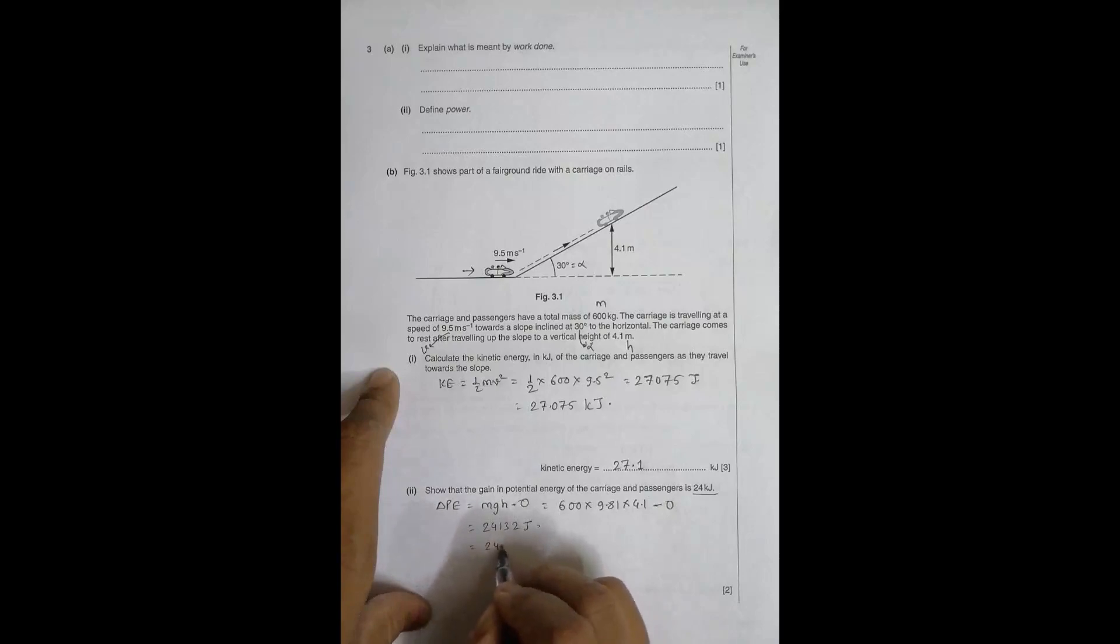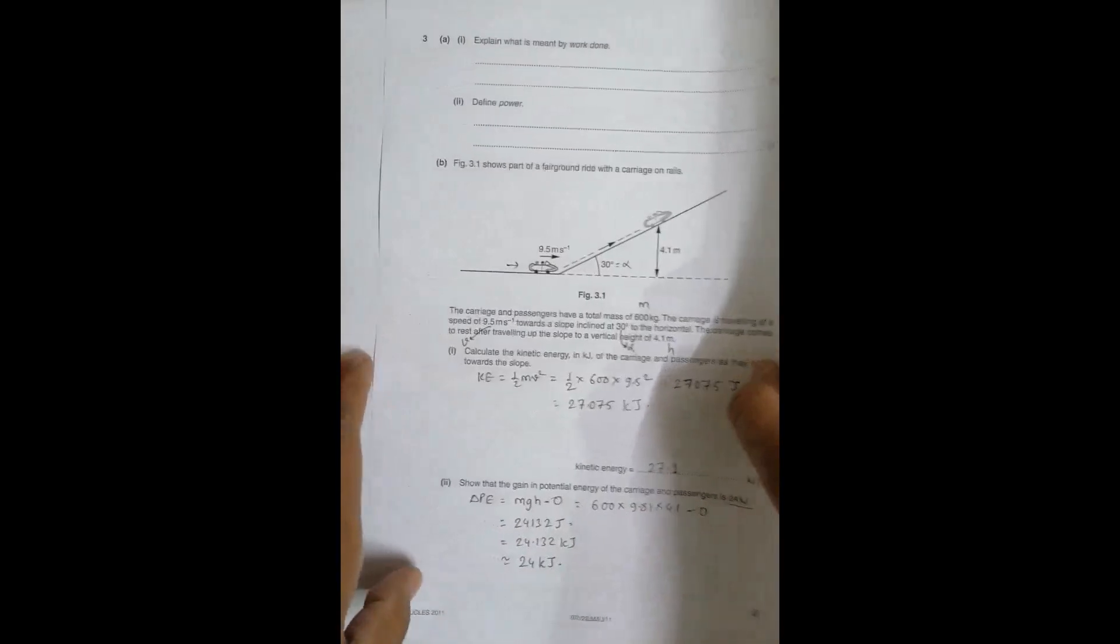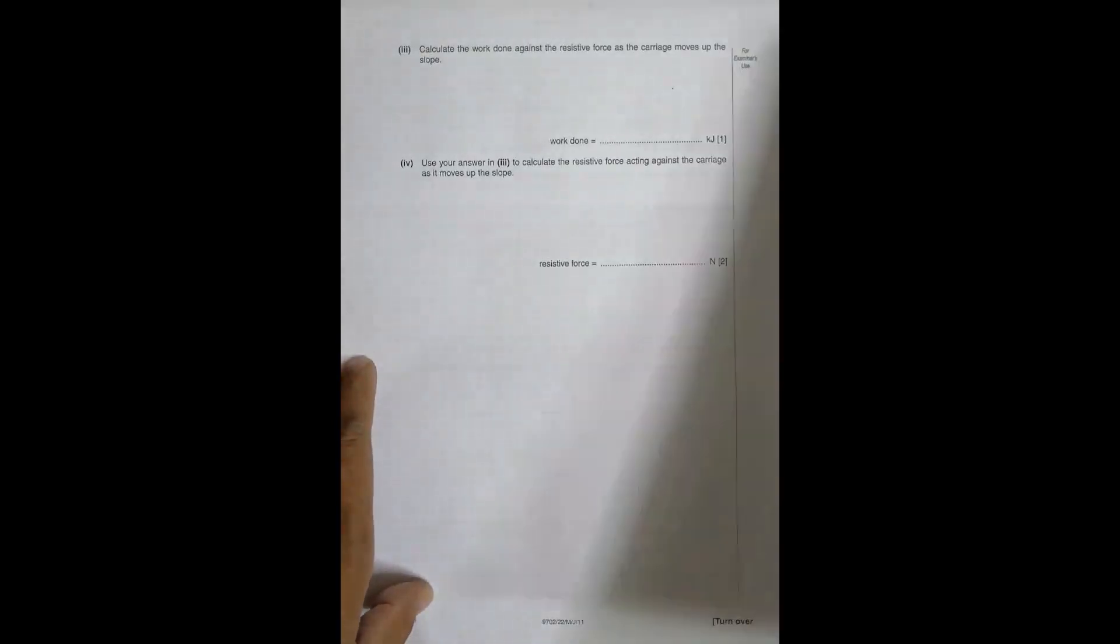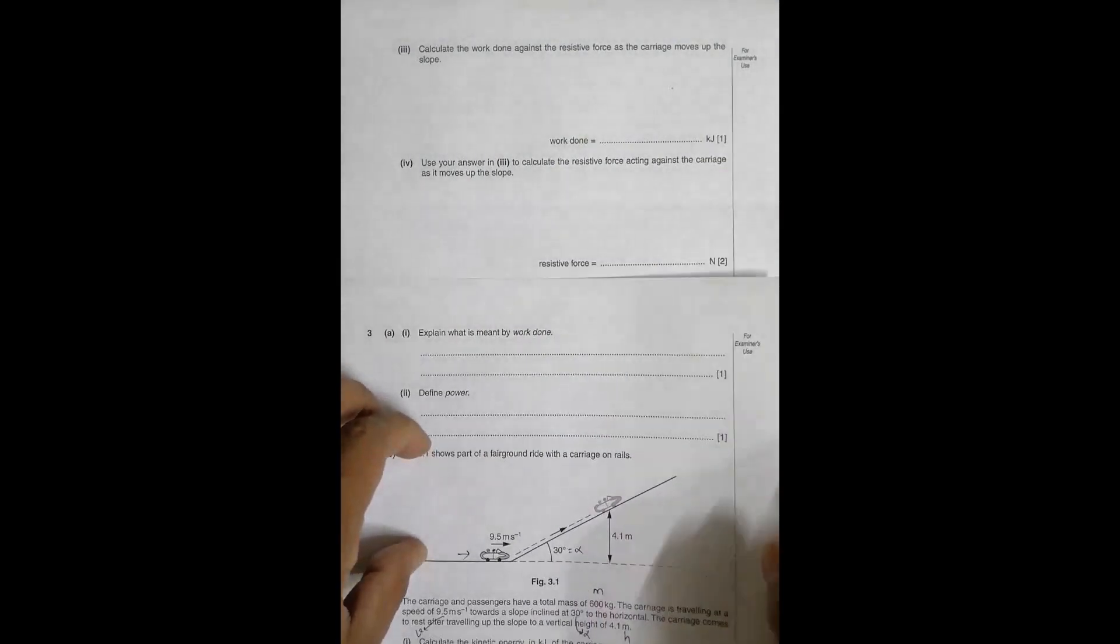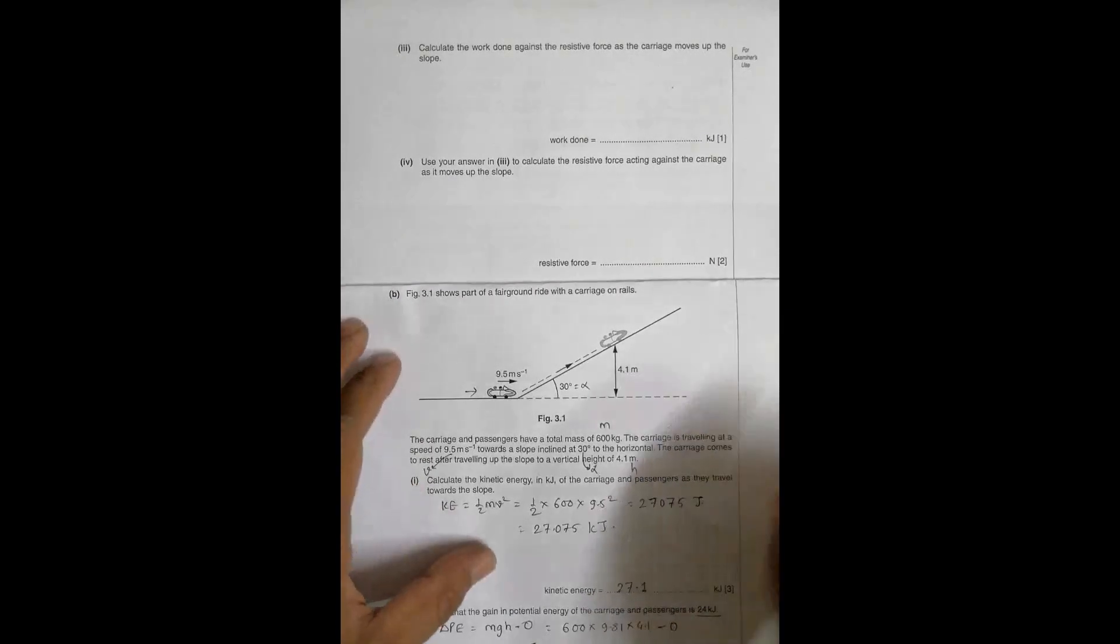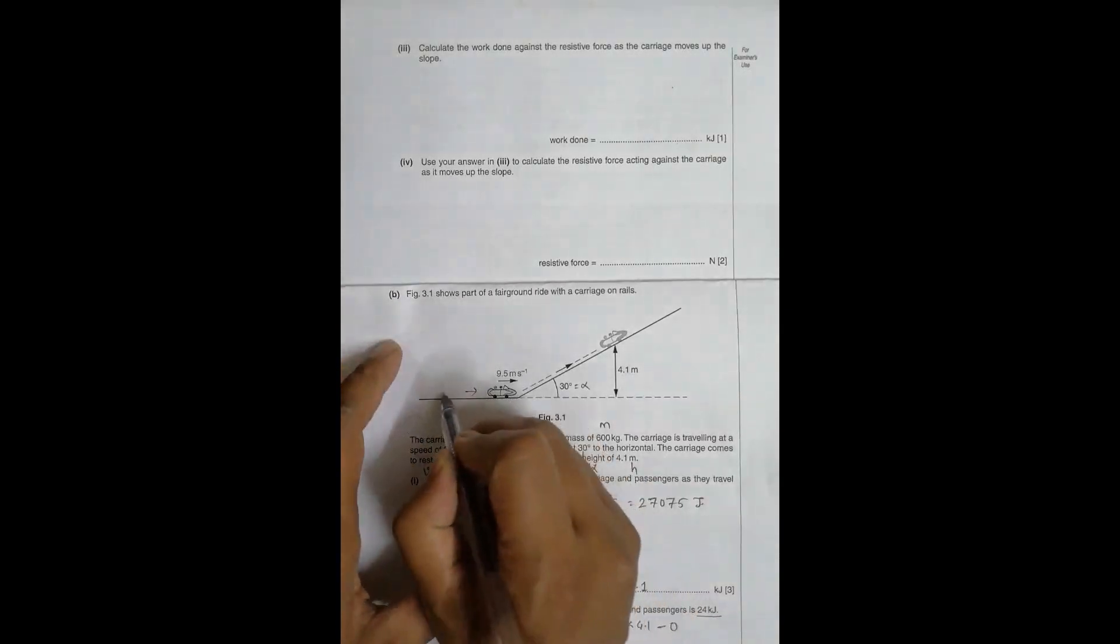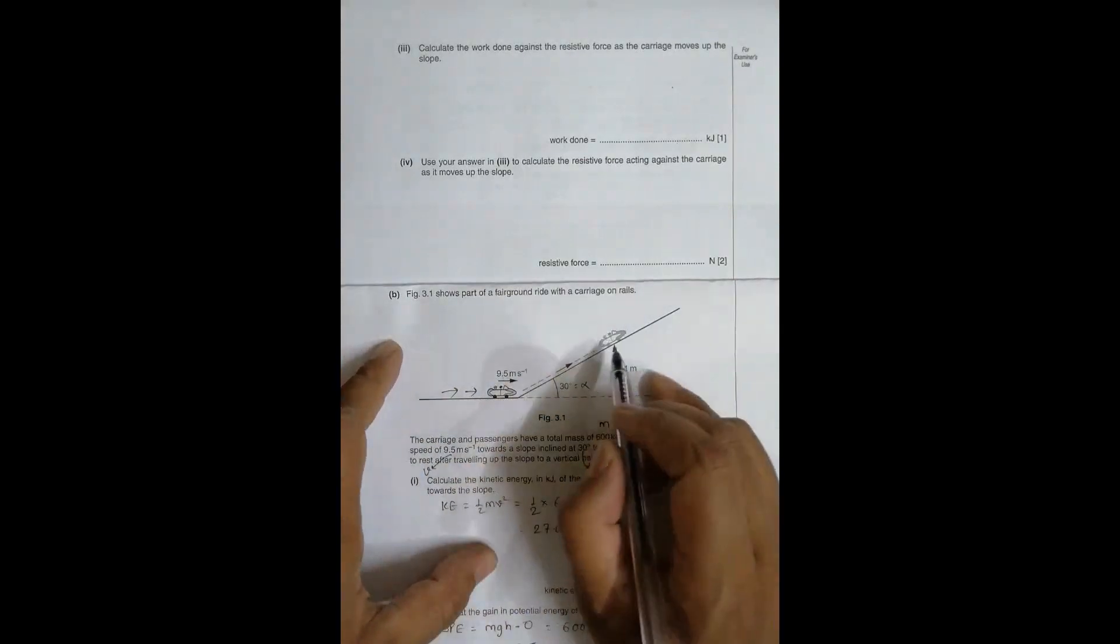Now the next question is calculate the work done against the resistive force as the carriage moves up the slope. Let me fold this thing such that I can explain things a bit more clearly. The initial energy that it possessed was only KE, so this KE is used for two purposes: one is to increase the PE, and the other is to do work against the frictional forces.